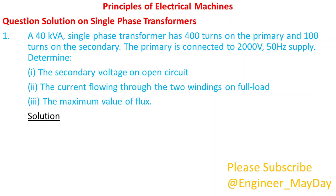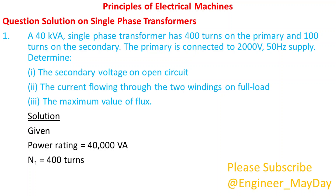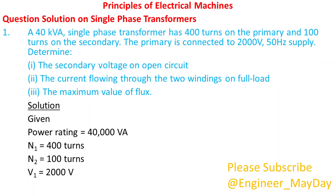Solution. Given: Power rating equals 40,000 volt-ampere. N1 equals 400 turns. N2 equals 100 turns. V1 equals 2000 volts. Frequency F equals 50 hertz.